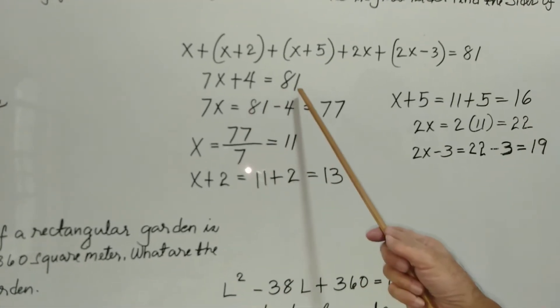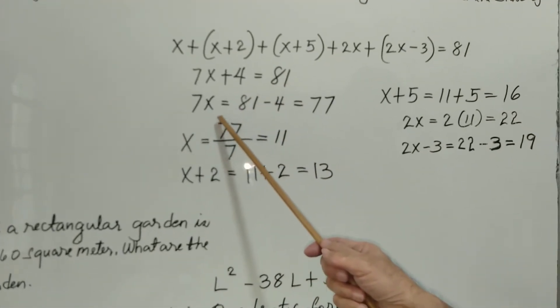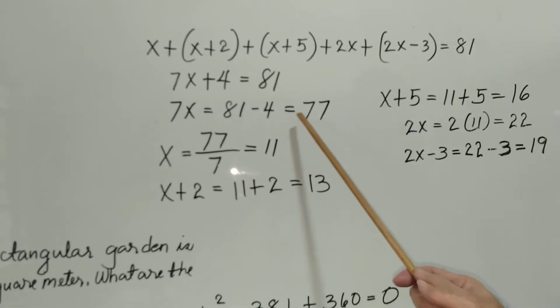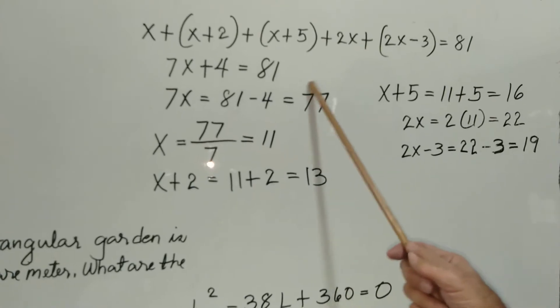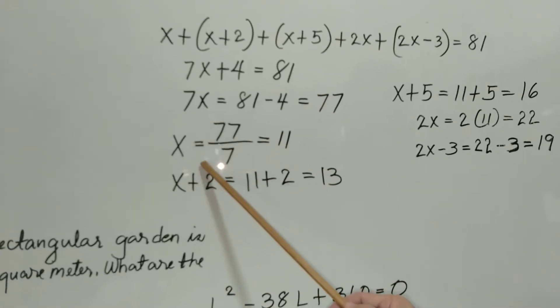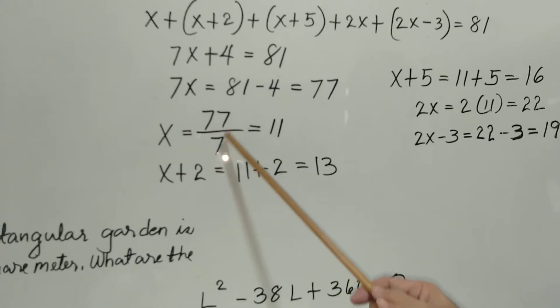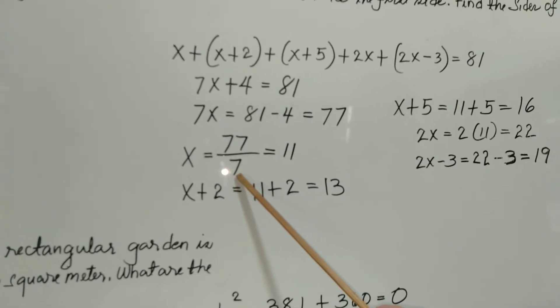We subtract 4 from both sides of the equation. So we have 7x equals 81 minus 4, that will be equal to 77. We divide both sides by 7, so x is 77 over 7 equals 11.